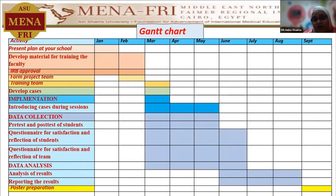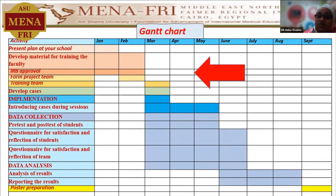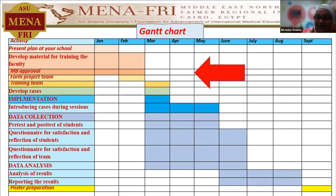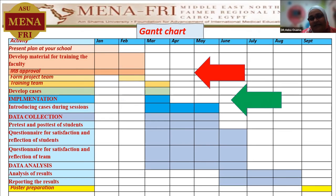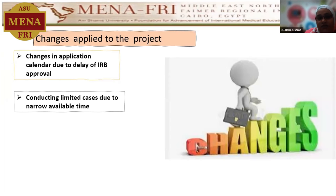There is a minimal change applied to the Gantt chart. This change in the time schedule occurred because there was a delay in the IRB approval. As we chose a newly established faculty at the Russian university, they did not previously have an ethical committee. Because of this, they formed the ethical committee, and my IRB approval was the first research approved in the institute. This delay in the IRB approval led to some delay in the implementation and training stages, and led to a limited number of cases being introduced in the curriculum. The changes applied are in the application calendar due to the delay of IRB approval, which led to conducting limited cases due to the narrow available time.